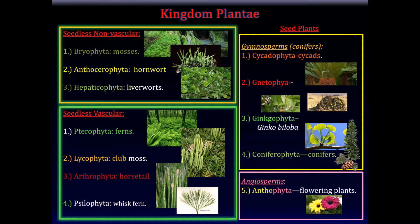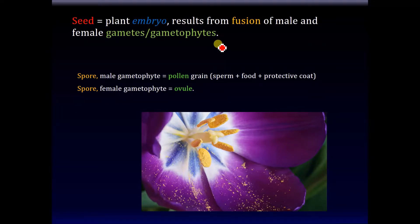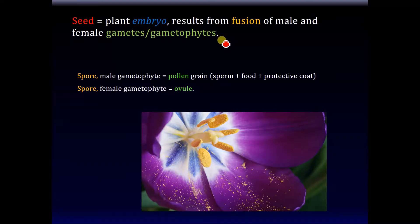So what you see before you now is the broad outline of the plant kingdom. Before we begin, we shall talk about the seed itself. Well, the seed is the plant embryo.